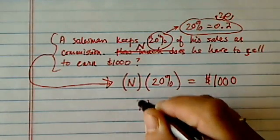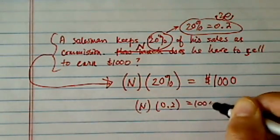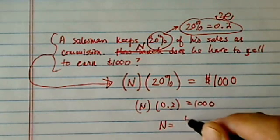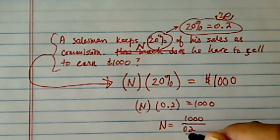Now from here, it's relatively easy to solve. You put a 1,000, and the N is equal to 1,000 divided by 0.2.